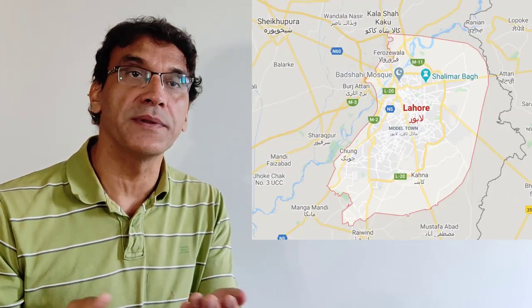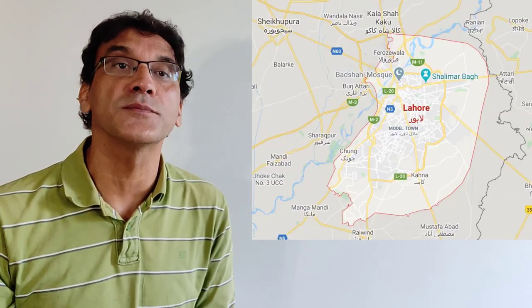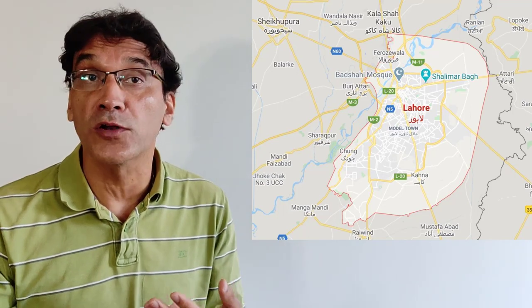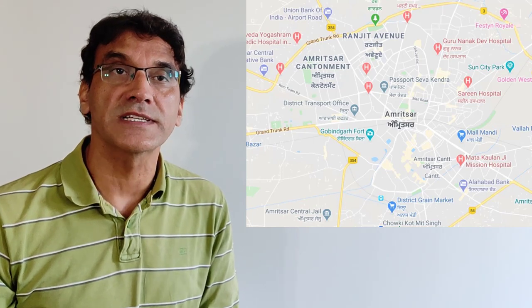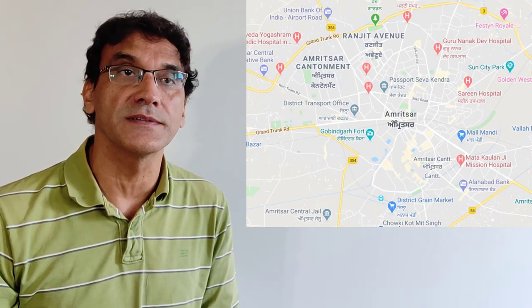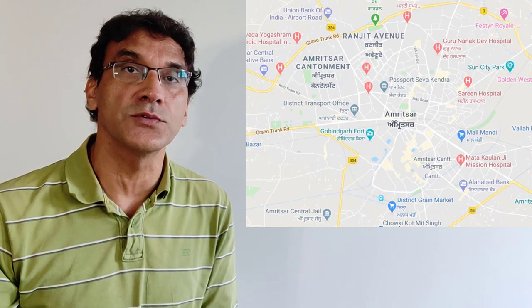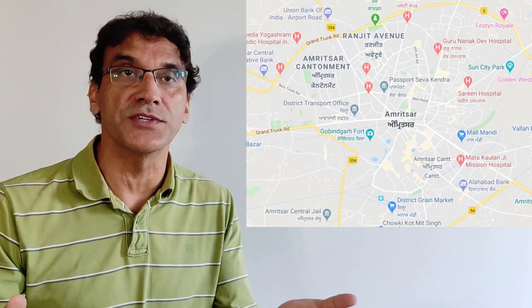The provinces of Punjab and Bengal were partitioned, and many cities in Punjab lost a significant portion of their population. For example, Lahore was 50% Muslim and 50% non-Muslim — almost all non-Muslims left the city. Similarly, the Muslim population in Amritsar was just under 50%, and since Amritsar was given to India, the entire Muslim population left. Karachi, a major metropolitan port city, also lost more than 35% of its population. These staggering numbers show the bloody legacy of partition.